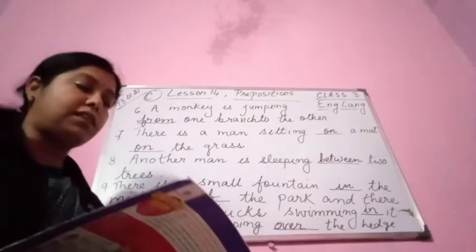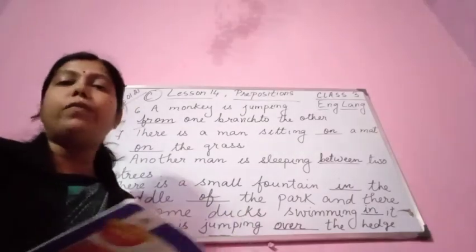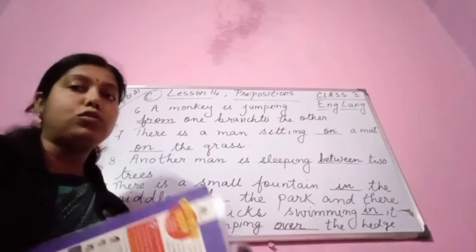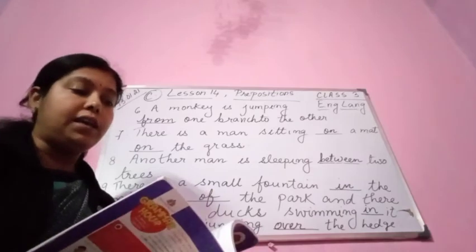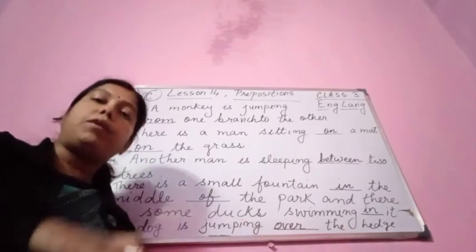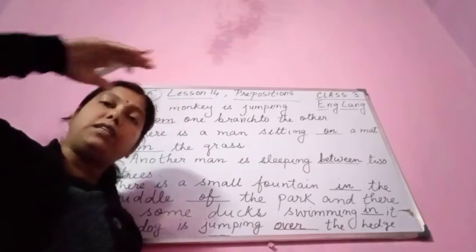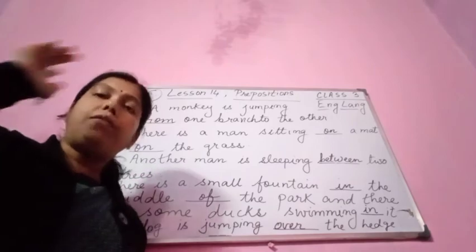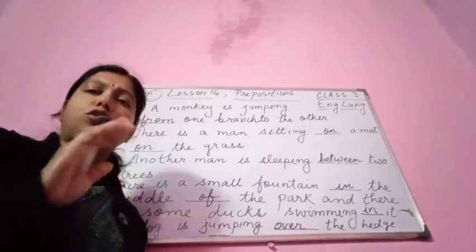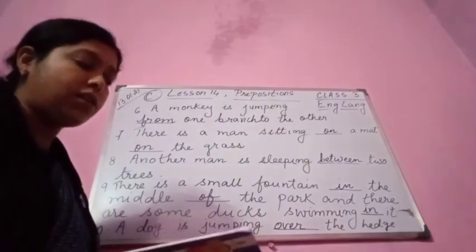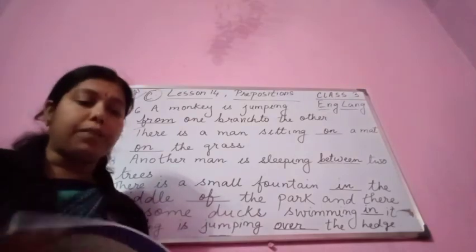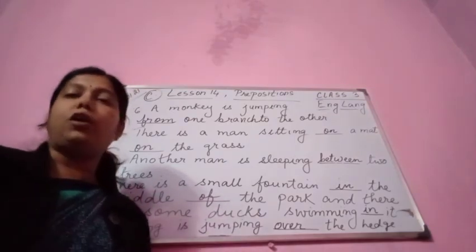Number 10: a dog is jumping over the fence. Why do we use 'over'? Because the dog is jumping slightly from above, it is going up — so we use 'over' here. A dog is jumping over the hedge.